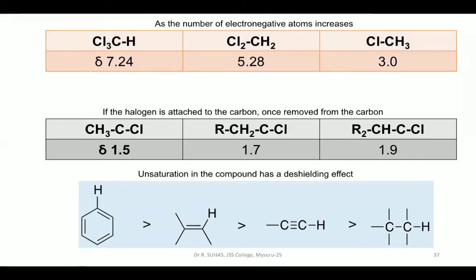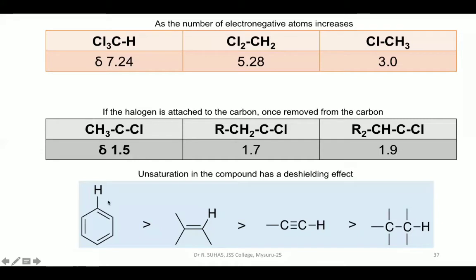What if there is unsaturation in the compound? Unsaturation leads to deshielding effect. For benzene with 3 pi bonds (6 pi electrons), the protons will appear around 6.5 to 7.5. This is followed by vinylic protons around 5.5 to 6.5, then acetylinic protons, and finally alkyl groups. Among this series, protons attached to the benzene ring show the most chemical shift value, followed by vinylic, acetylinic, and alkyl.